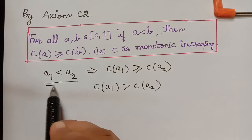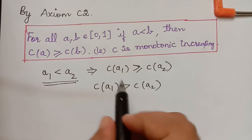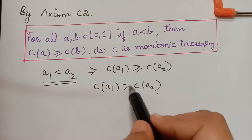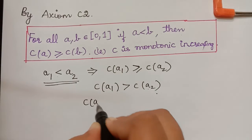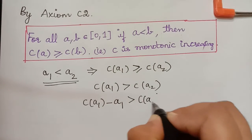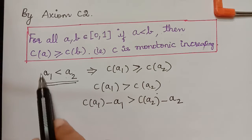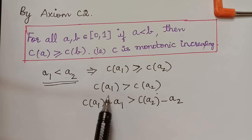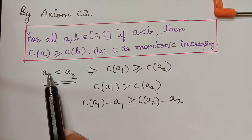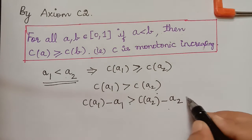Because A1 is lesser than A2, A1 is the smaller quantity and C of A1 is bigger than C of A2. If we subtract the smaller quantity A1 from C of A1, and compare with C of A2 minus A2, the inequality remains the same since A1 is lesser than A2. So C of A1 minus A1 is greater than C of A2 minus A2. Let this be equation 4.